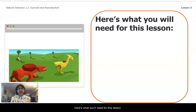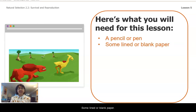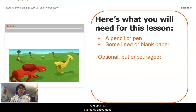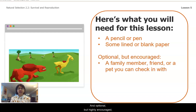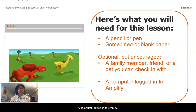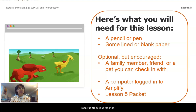Here's what you'll need for this lesson: a pencil or a pen, some lined or blank paper, and optional but highly encouraged, a family member, a friend, or a pet that you can check in with, a computer logged in to Amplify, and if you have one, a Lesson 5 packet that you received from your teacher.